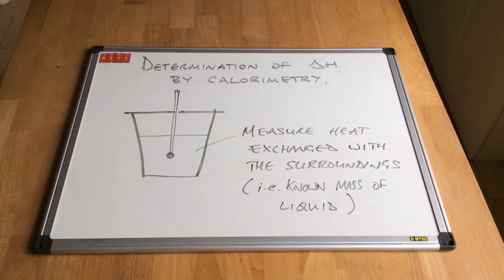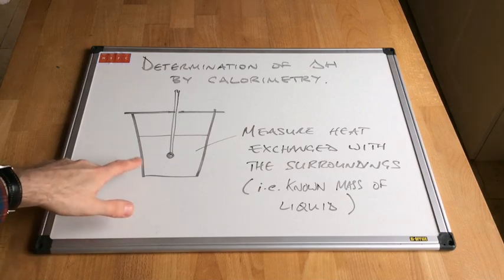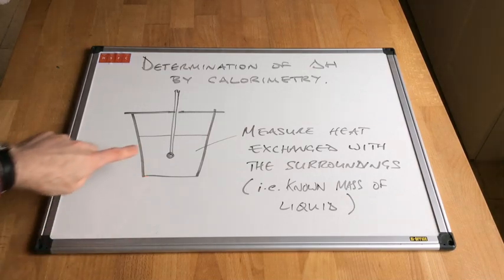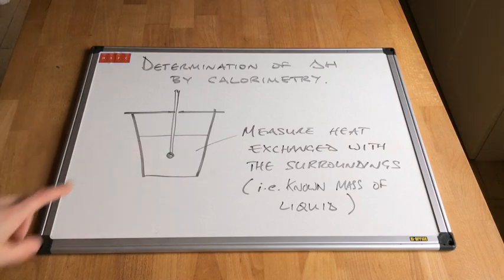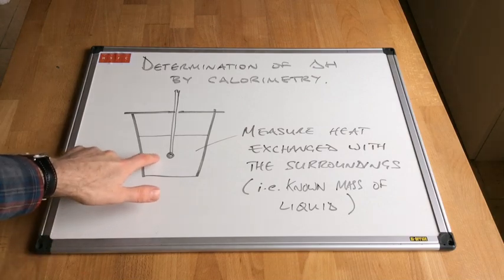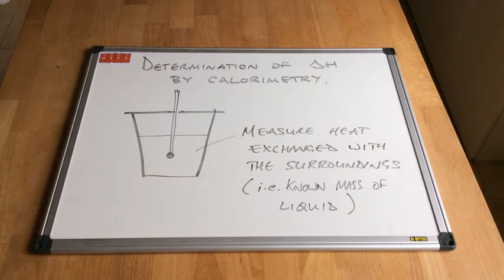In this video we're going to look at how the enthalpy change of a reaction, delta H, can be determined by a method known as calorimetry. Essentially the reaction is going to be carried out in an insulated beaker with a thermometer, and we're going to measure the heat that's exchanged with the surroundings. The surroundings are going to be a known mass of liquid.